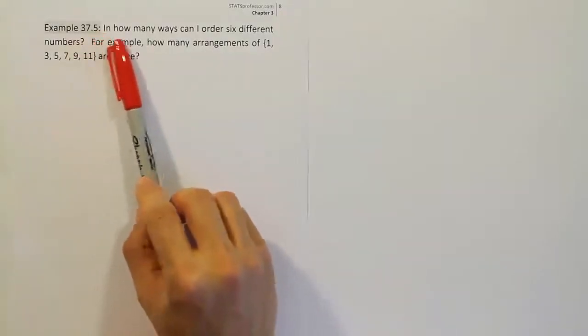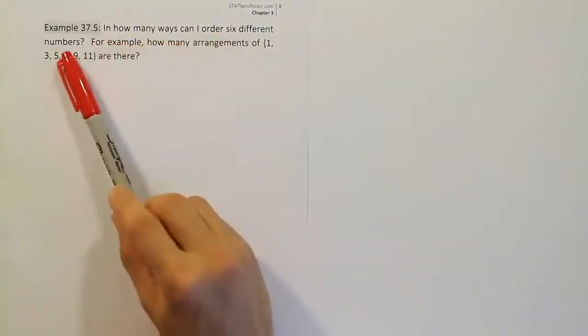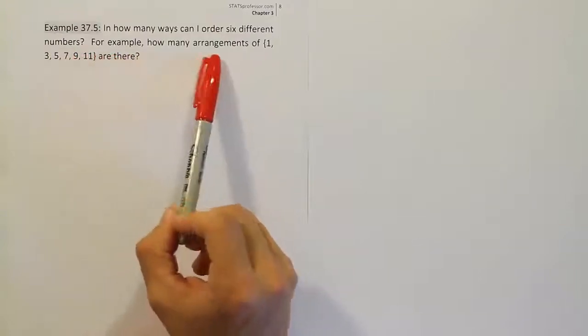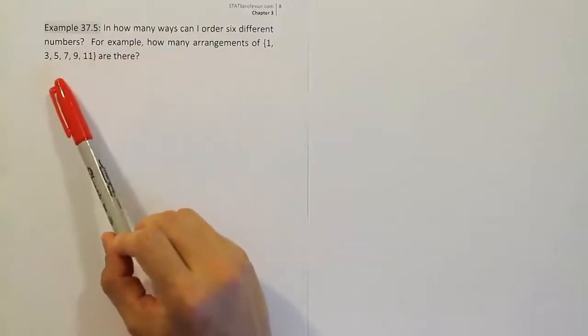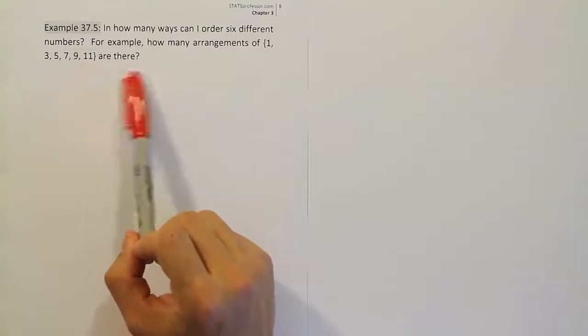Example 37.5. In how many ways can I order six different numbers? For example, how many arrangements of 1, 3, 5, 7, 9, and 11 are there?